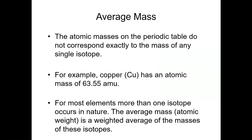The atomic masses on the periodic table don't correspond to the mass of any single isotope. A great example of this would be copper. Copper has a mass of 63.55 atomic mass units if you look on the periodic table. That's about as far from a whole number as you can get — it's halfway in between 63 and 64. So the question is: what does that number mean and how do we arrive at it?